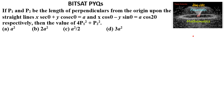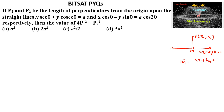We know that the perpendicular distance from any point (x1, y1) upon the line ax + by + c = 0 is given by: distance = |ax1 + by1 + c| / √(a² + b²).